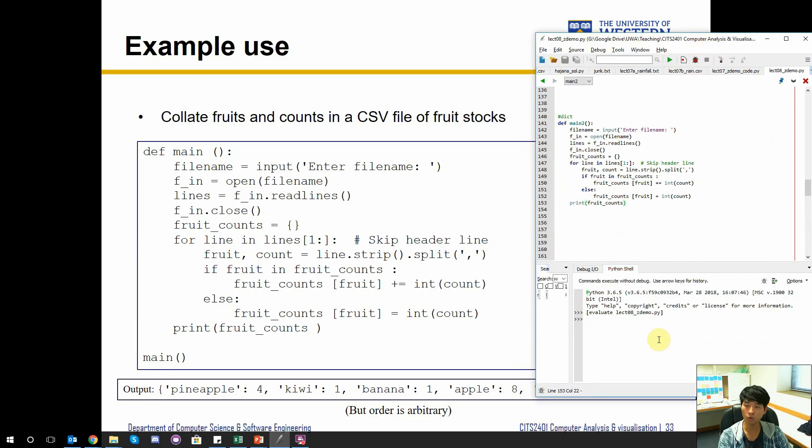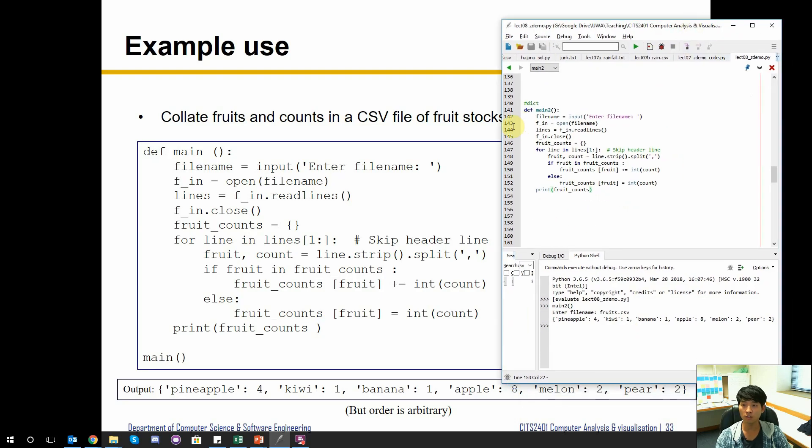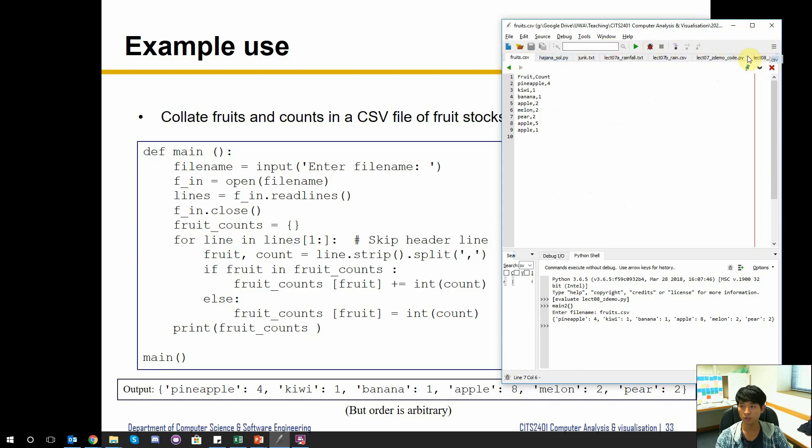So if we run this and call main 2, then we have the fruits dot CSV and we can see that it has accumulated all the fruits.